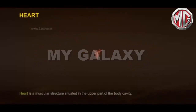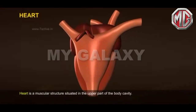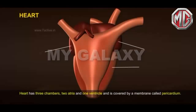Heart: The heart is a muscular structure situated in the upper part of the body cavity. It has three chambers — two atria and one ventricle — and is covered by a membrane called the pericardium.